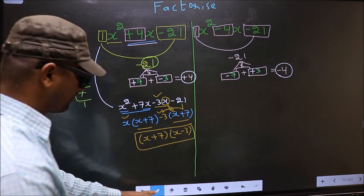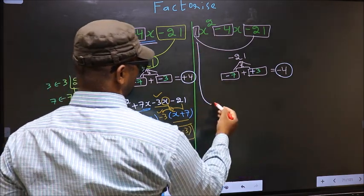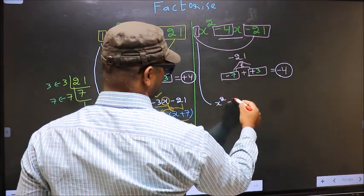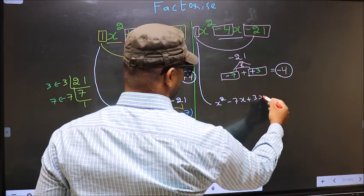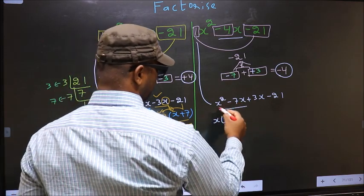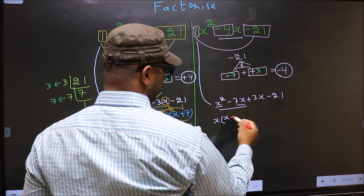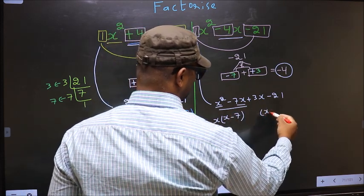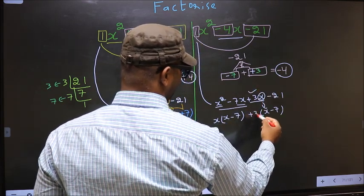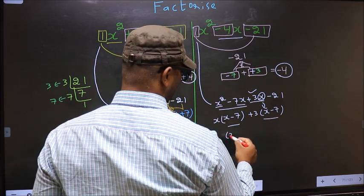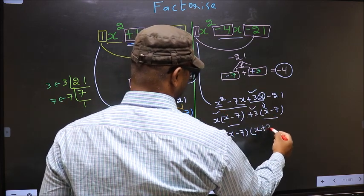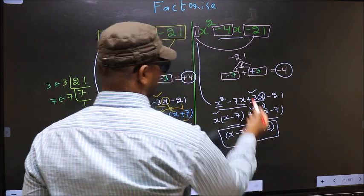Now for the second expression, rewrite x² - 4x - 21 by splitting -4x as -7x + 3x - 21. From the first two terms, take out x common: x(x - 7). From the last two terms, take out +3 common: +3(x - 7). Now take (x - 7) common: the answer is (x - 7)(x + 3).